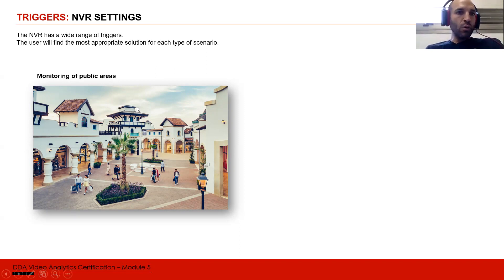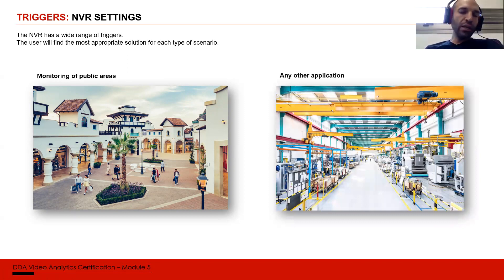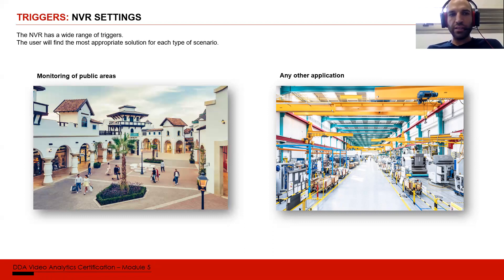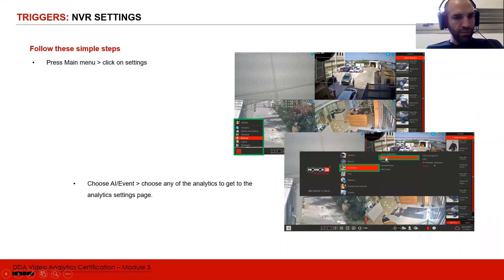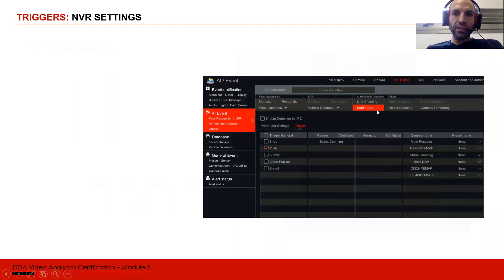We will use NVRs when monitoring public areas or large areas with more than one camera. Generally NVRs are the core of any CCTV installation. Since we're talking about DDA analytics, note that DVRs do not support DDA analytics yet. To configure: go to menu, settings, AI event, AI event, then choose the analytics you want to set, and you'll have the triggers.